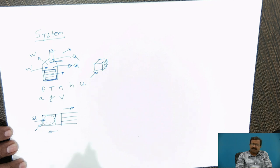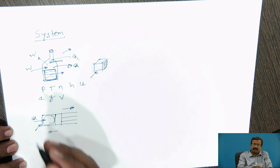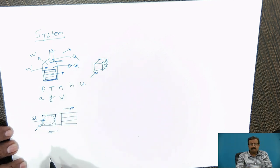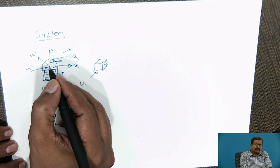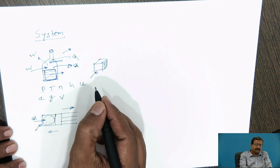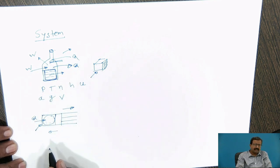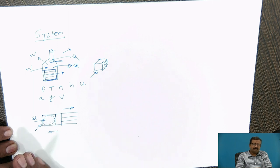It is interacting with the surrounding, and surrounding is not a vague concept. Many students have a problem that they say that anything excluding the system is surrounding. It is not like that. If I say that surrounding is something vague, then I am not in a position to find out what changes have taken place in the surrounding. Surrounding itself is a well-defined system.